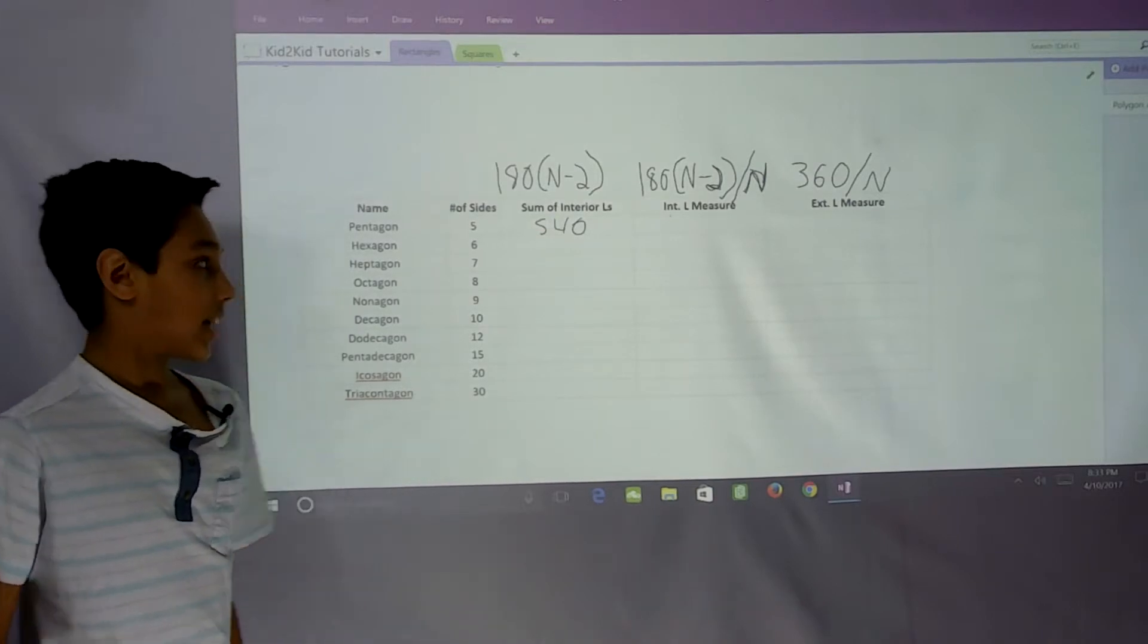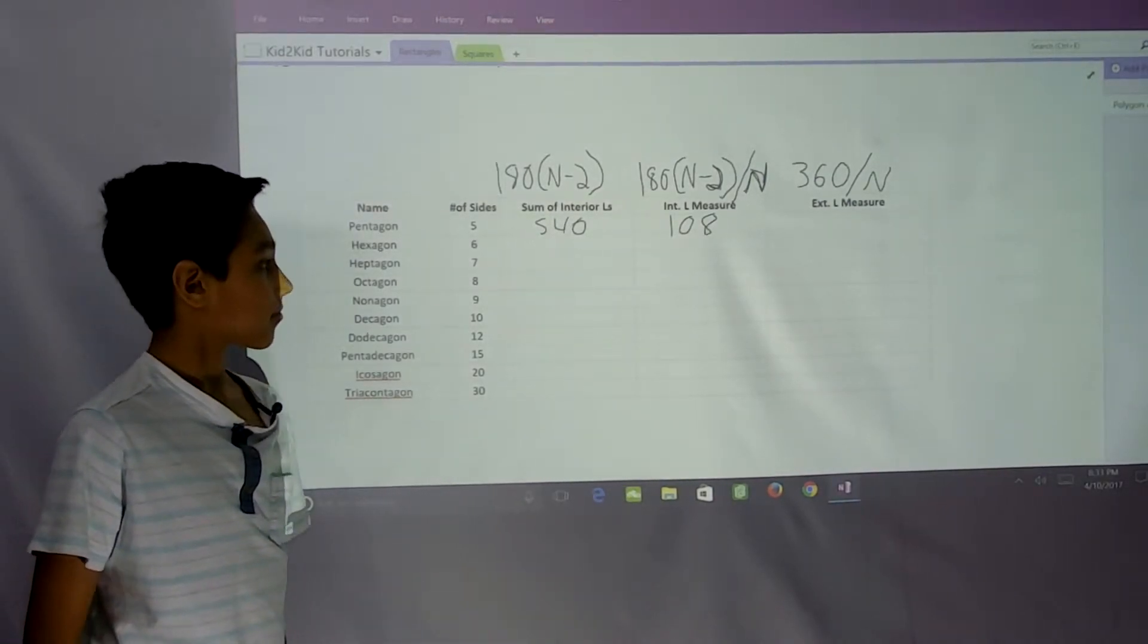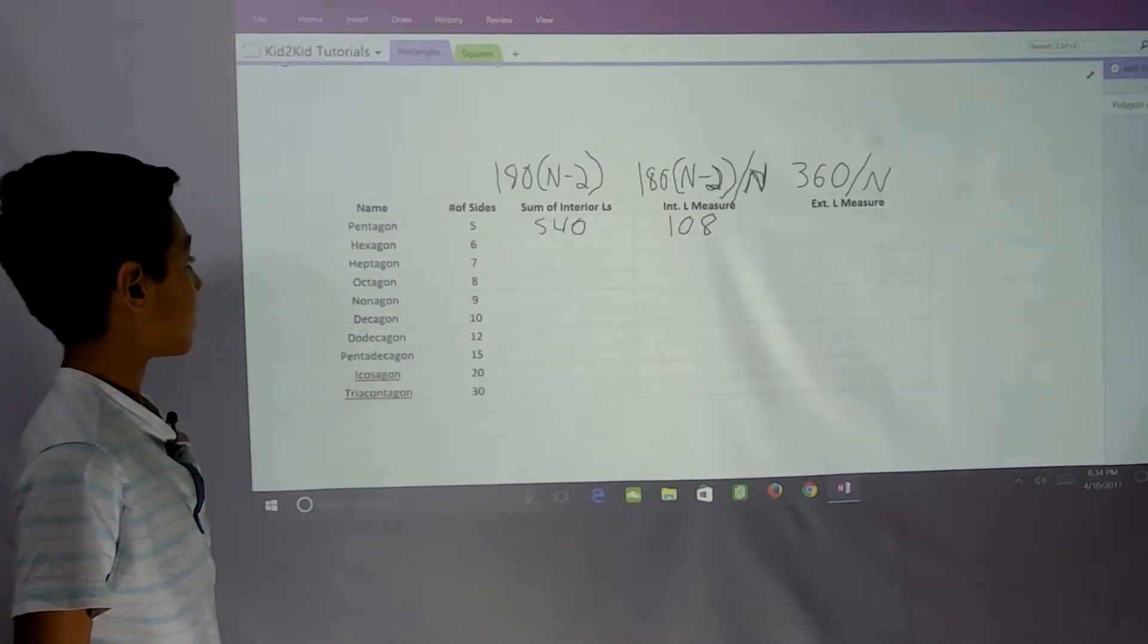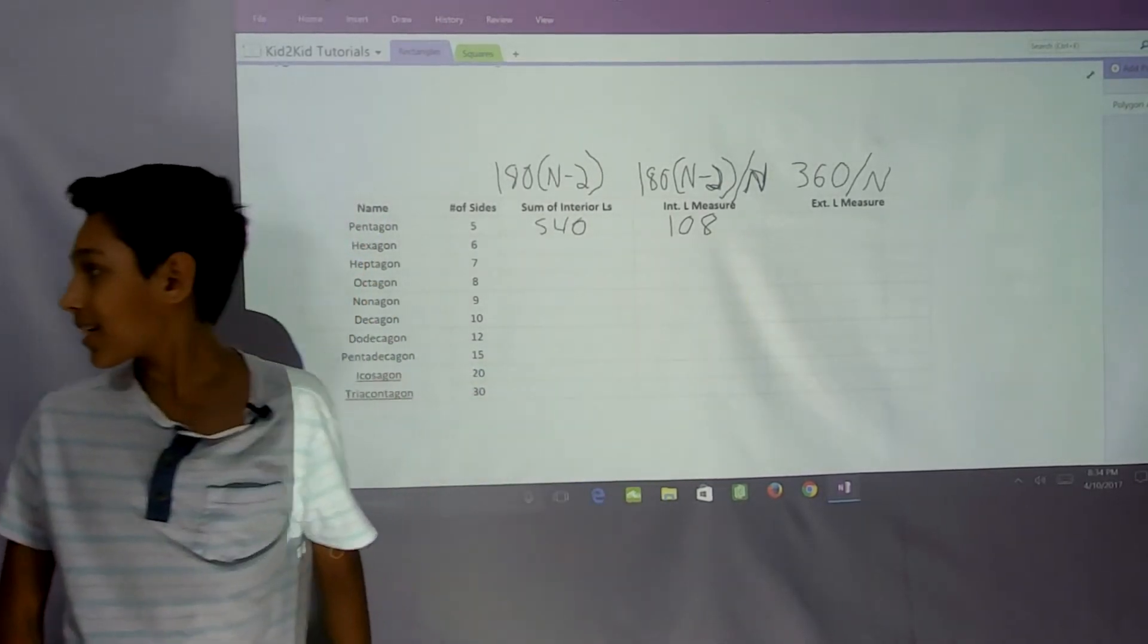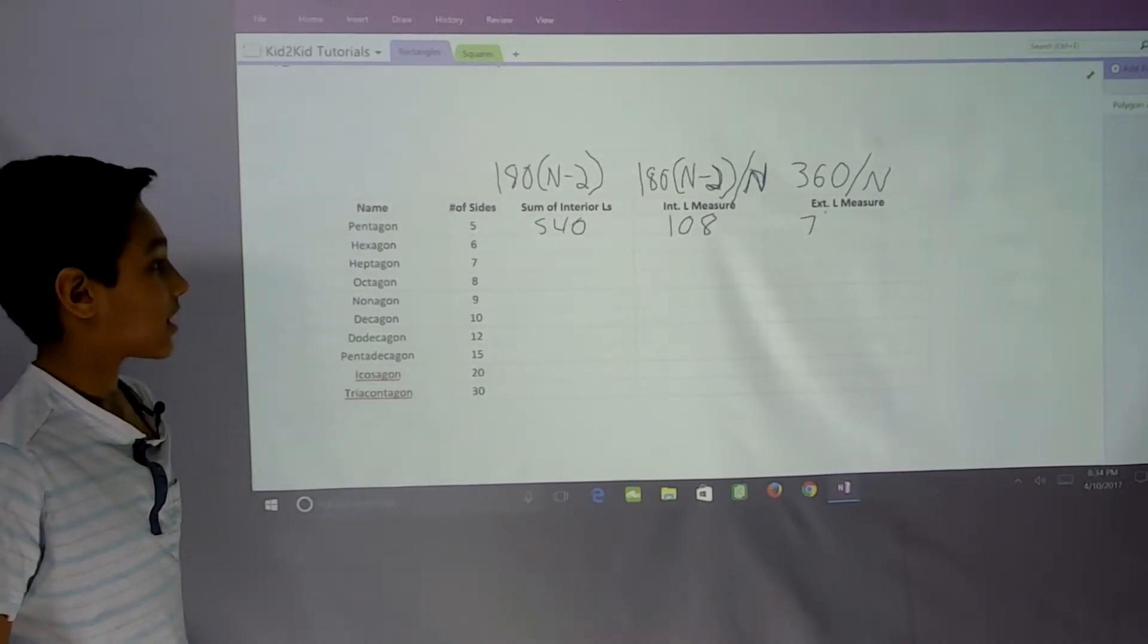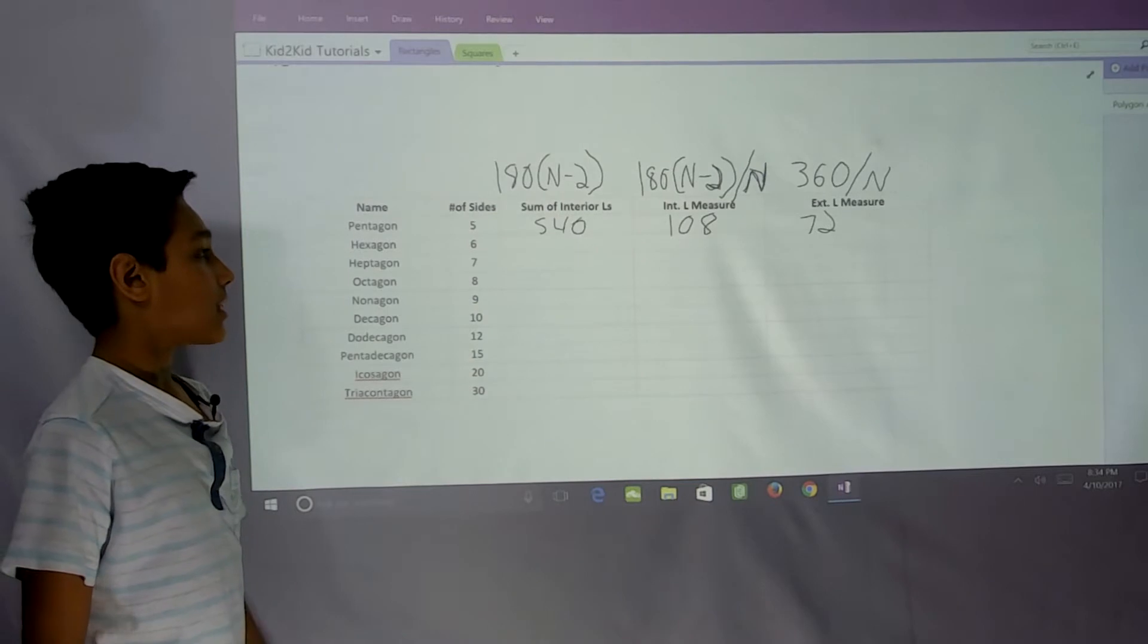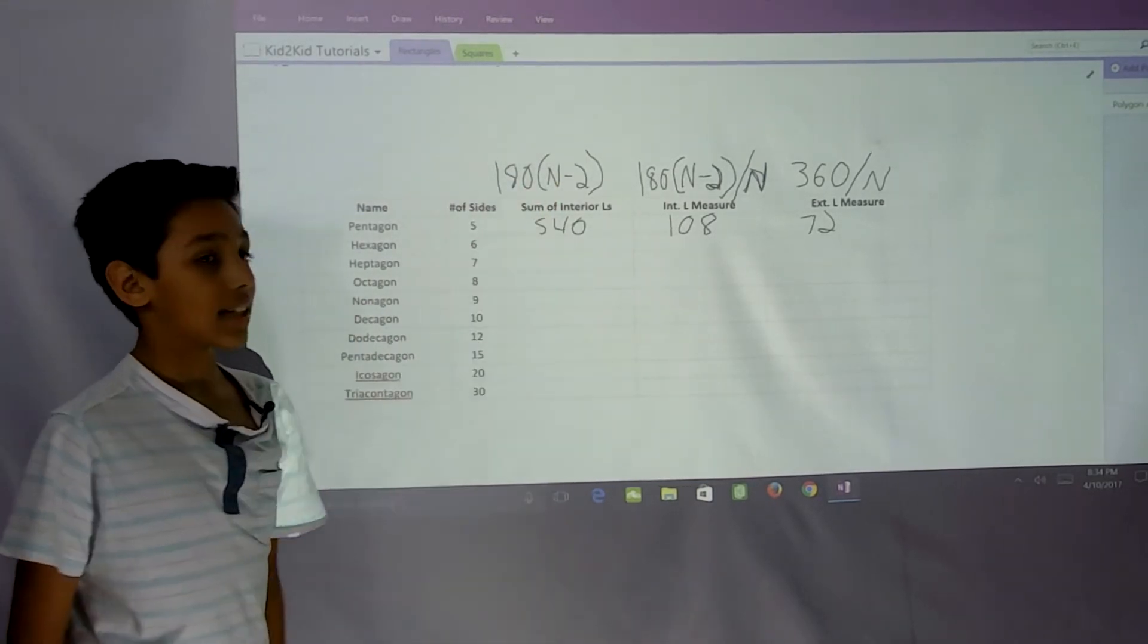For the exterior angle measure, we do 360 divided by 5, which is n, and we get 72 degrees. Now let's go on to a hexagon. We have 6 sides, so n would be 6. We plug in 6 there, we have 180 times 4, which equals 720.